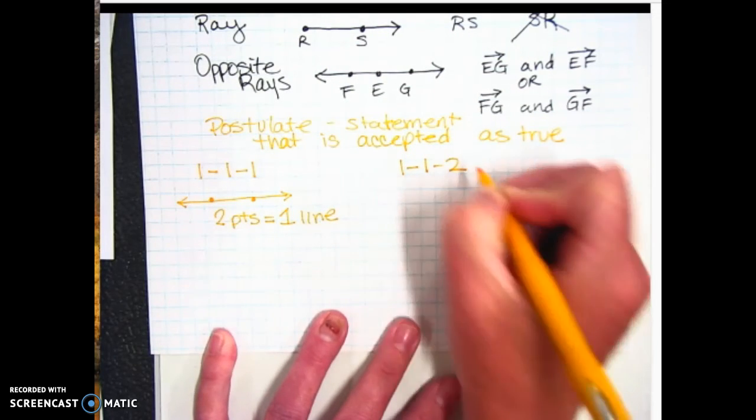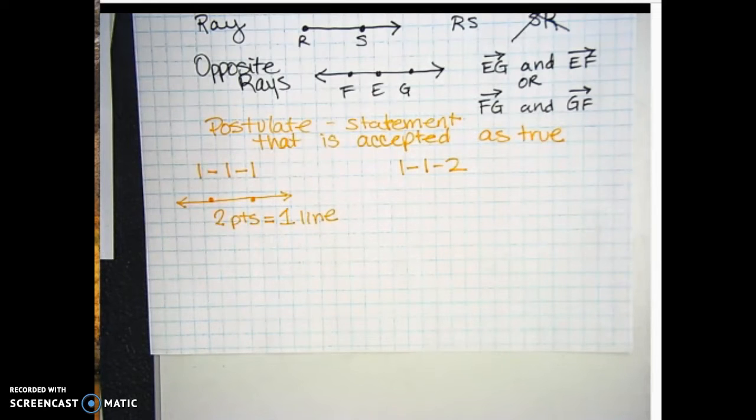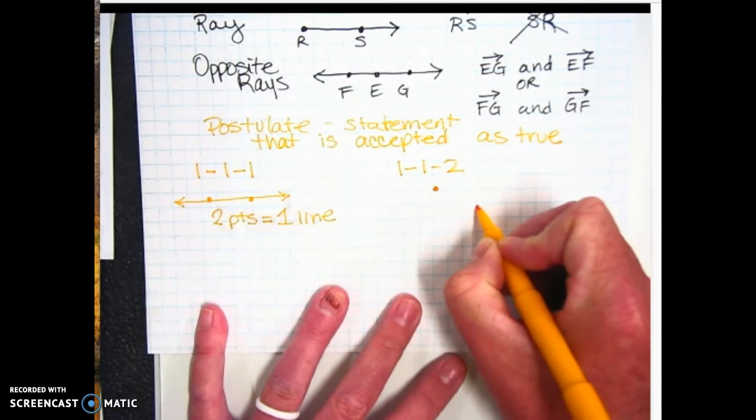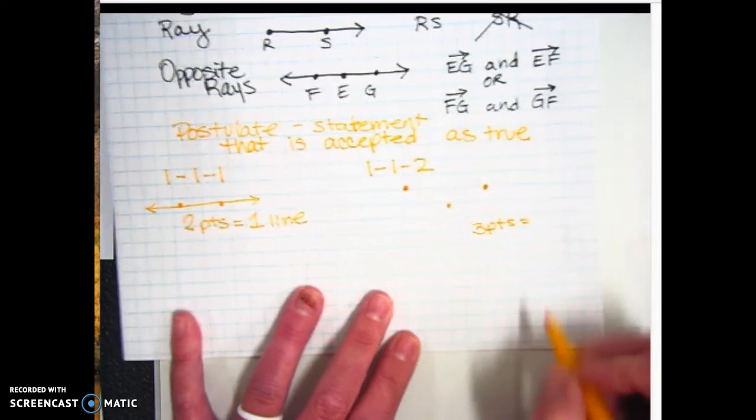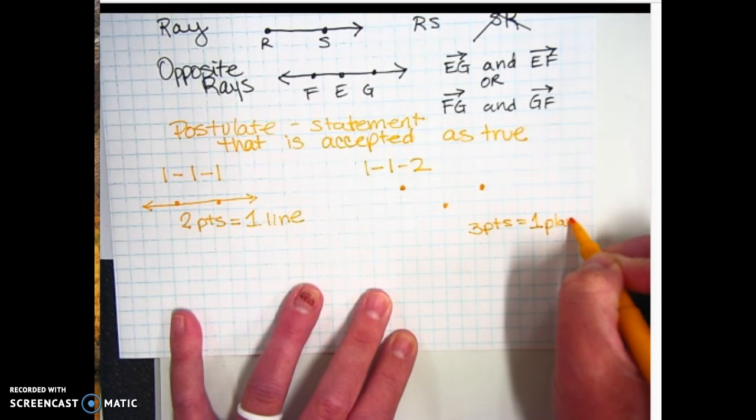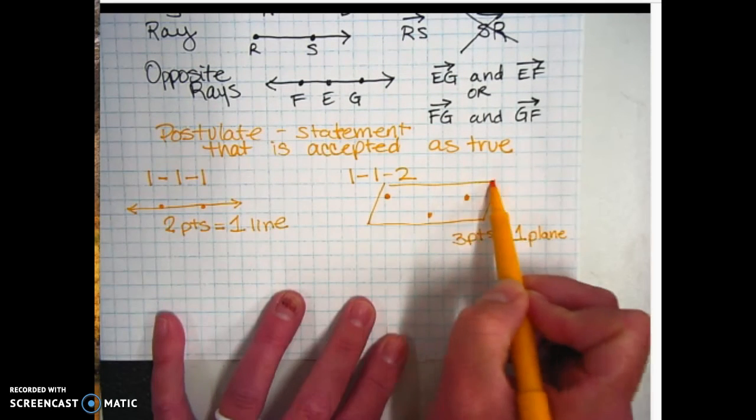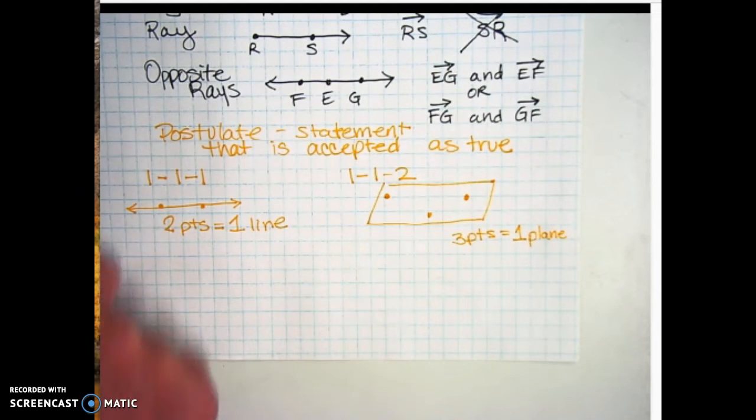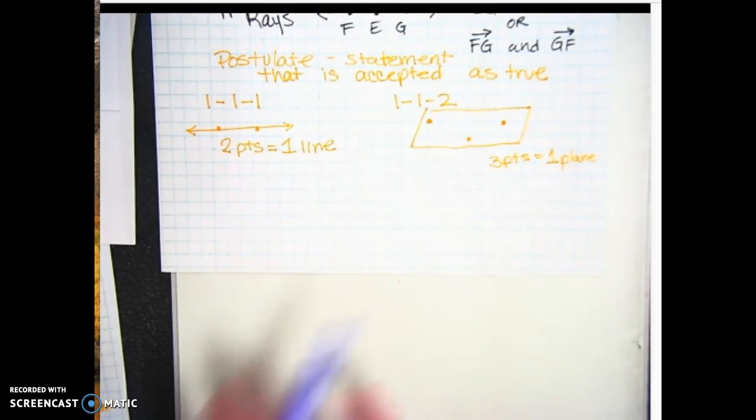Alright, the next postulate is 1-1-2. So chapter 1, section 1, the second postulate. And it says this, that through any three non-collinear points, there is exactly one plane containing them. So over here, we did two points. Now we're going to do three. One, two, three. And three points, instead of making a line, makes one plane, P-L-A-N-E. And we already drew a plane up here. It's basically a slanted rectangle called a parallelogram. And it represents a space, like a flat space. That's our second postulate or statement that basically we call true.